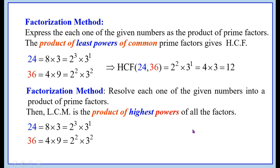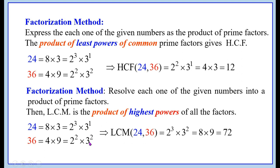For LCM, we take the highest powers. Between 2³ and 2², the highest power is 3, so we take 2³. Between 3¹ and 3², the highest power is 2, so we take 3². Therefore LCM of 24 and 36 = 2³ × 3² = 8 × 9 = 72. The only difference: for HCF take the least power; for LCM take the highest power.